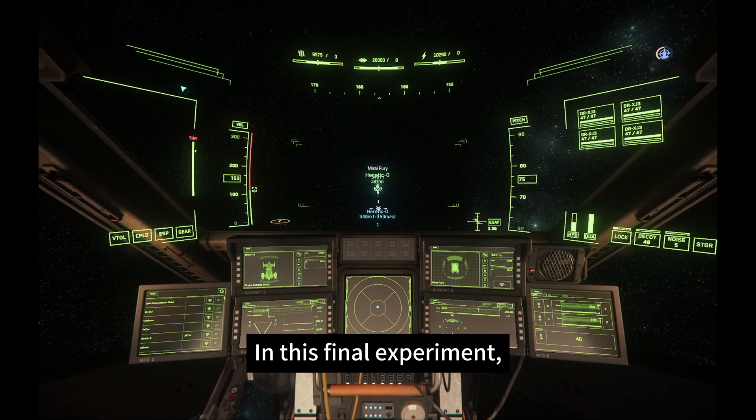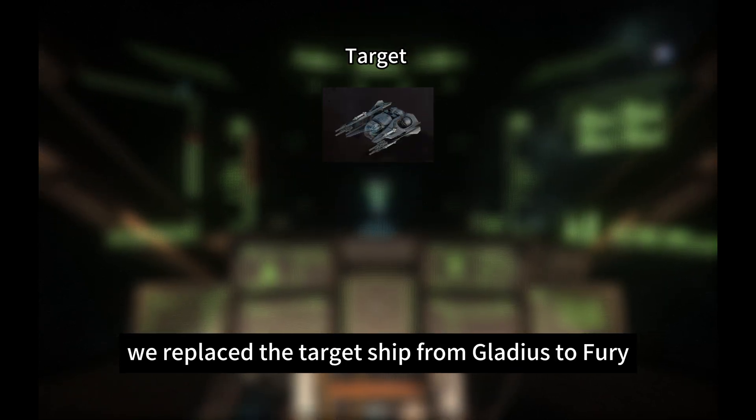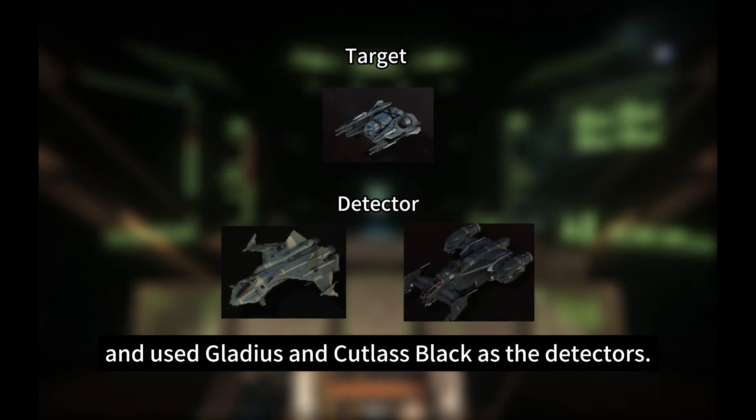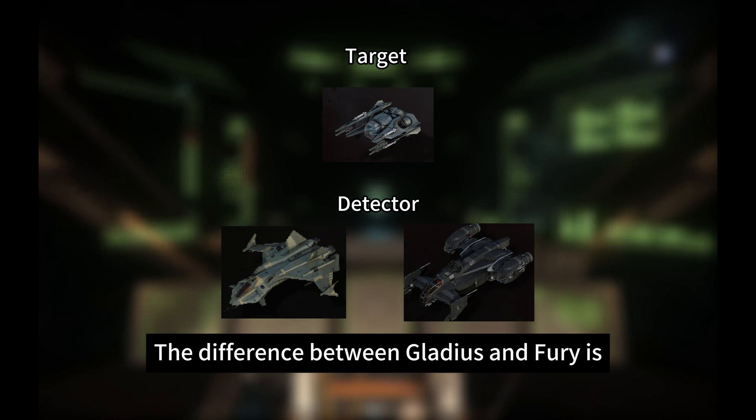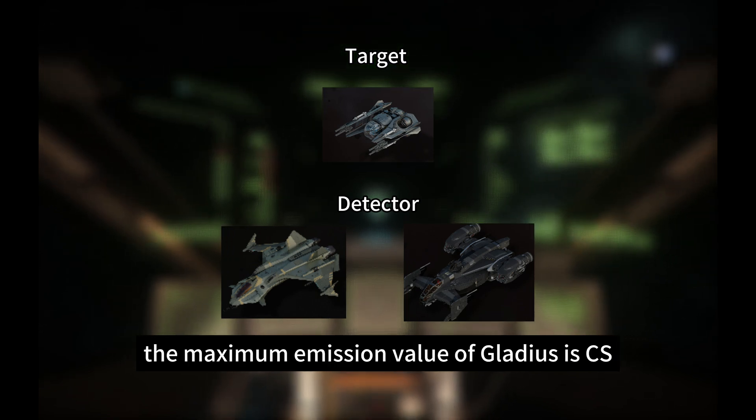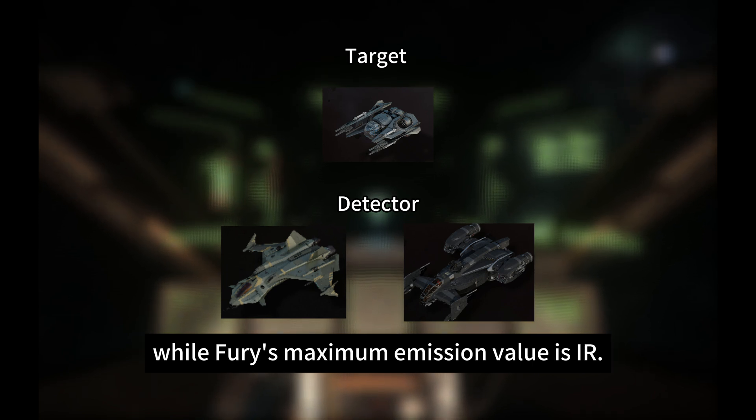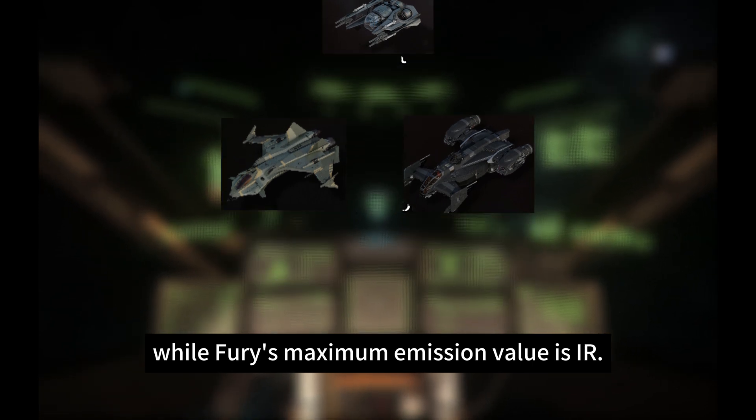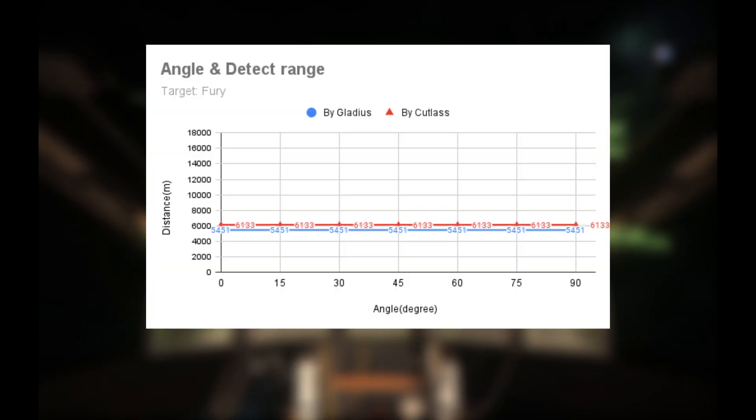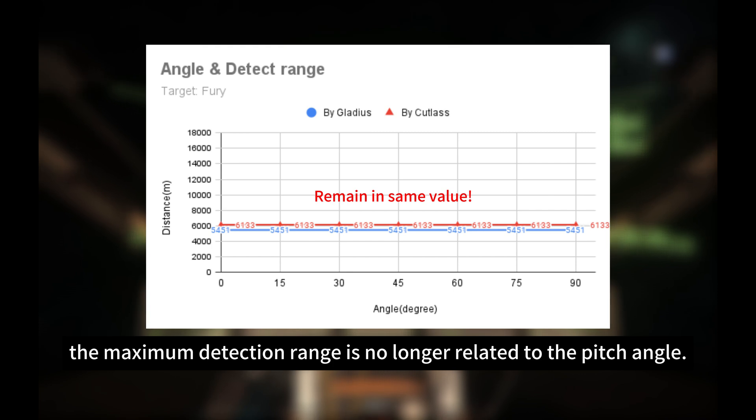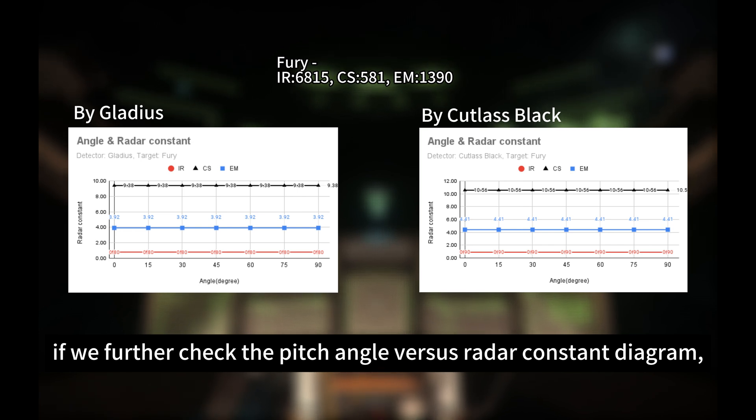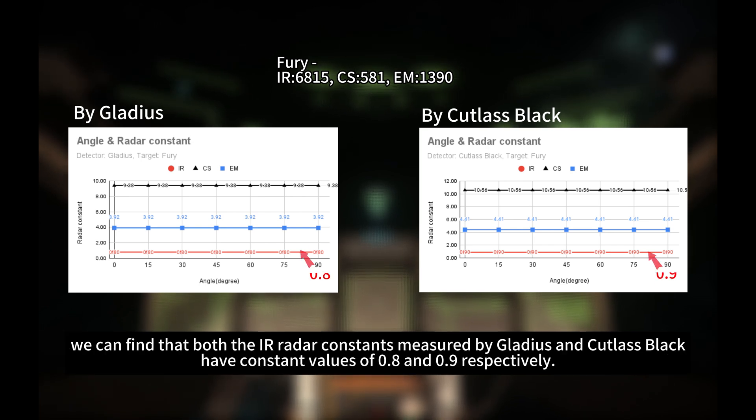In this final experiment, we replace the target ship from Gladius to Fury, and use Gladius and Cutlass Black as detectors. The difference between Gladius and Fury is the maximum emission value from Gladius is CS, while Fury's maximum emission value is IR. The test result is shown above. As you guys see, the maximum detection range is no longer related to the pitch angle. Besides, if we further check the pitch angle versus radar constant diagram, we can find that both the IR radar constant measured by Gladius and Cutlass Black has a constant value of 0.8 and 0.9 respectively.